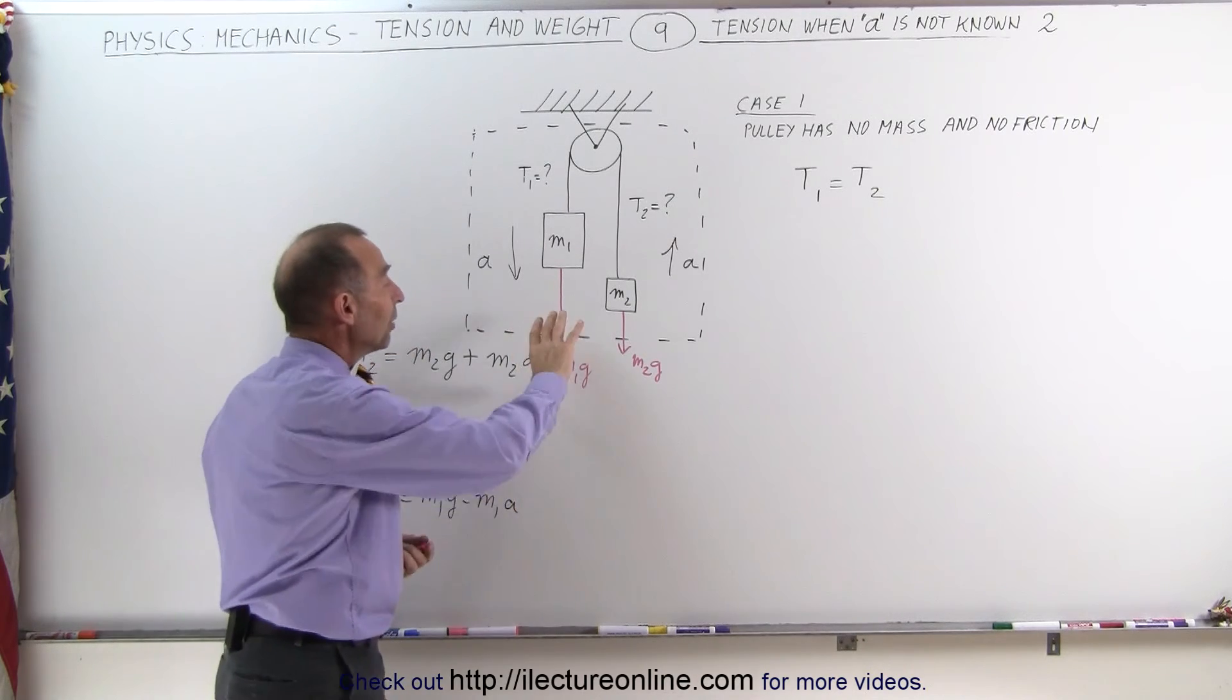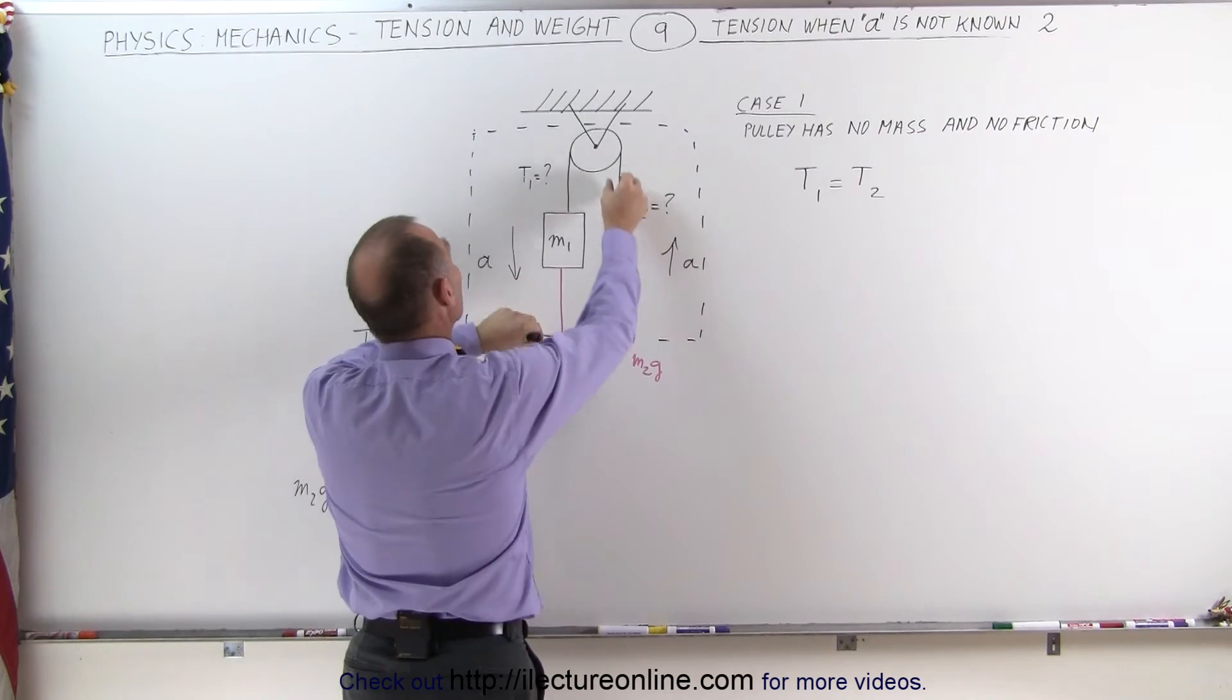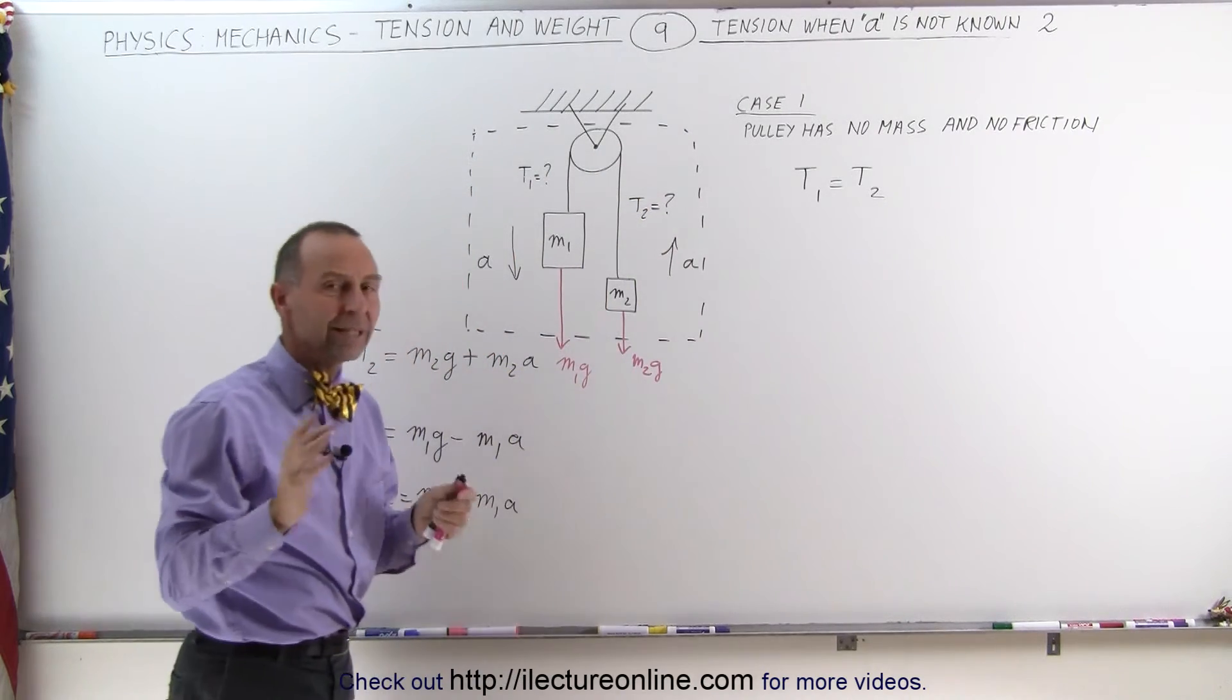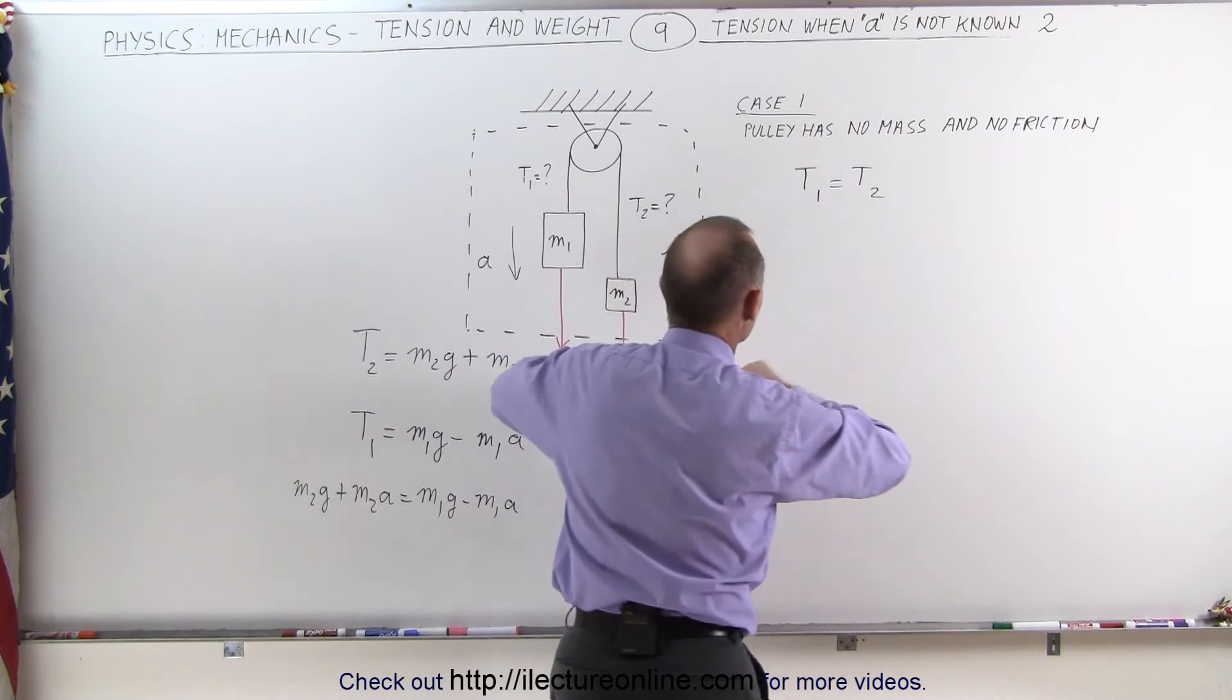Notice that M1G, being larger than M2G, will cause the whole system to accelerate in this direction. Assuming that to be the correct direction, we can now come up with the equation that tells us that F net equals mass total times acceleration.